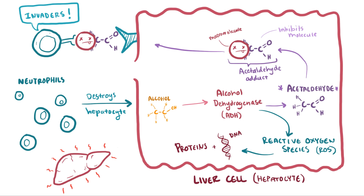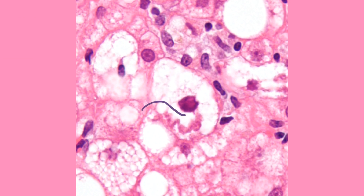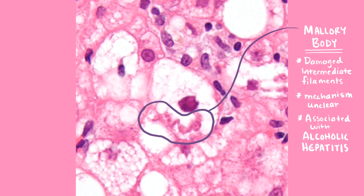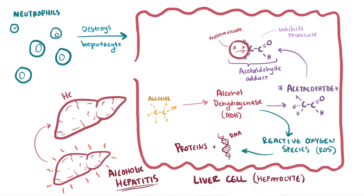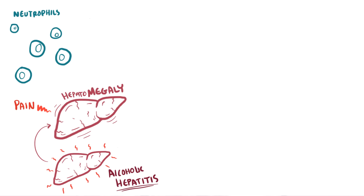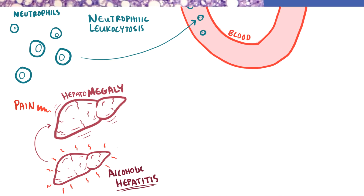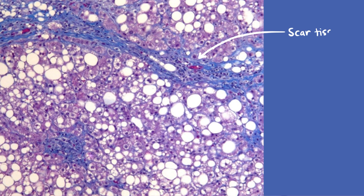As the cells become inflamed and damaged, patients have now developed alcoholic hepatitis, and we start to note a change on histology — notice these bundles of proteins called Mallory bodies. Specifically, these are damaged intermediate filaments located in the cytoplasm of hepatocytes. The mechanism that produces these bodies is still unclear, but they're most commonly seen in alcoholic hepatitis. At this point the patient might have painful hepatomegaly, neutrophilic leukocytosis, or an increased amount of neutrophils in the blood. Also, as cells become damaged and die off, scar tissue starts to form around the central veins of the liver, known as paravenular fibrosis.